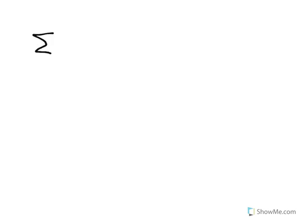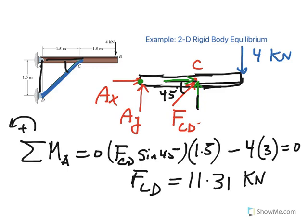So now, we can go ahead and find the rest of the reactions, AX and AY, by summing forces in X. And notice that we had an AX. Now, going back, you see that the X component of FCD is pointing to the right, and that would be 11.31 cosine 45.